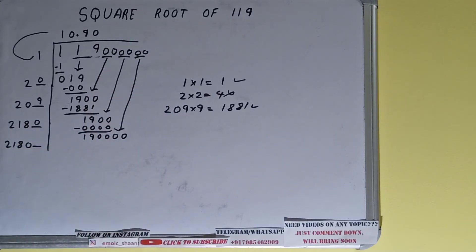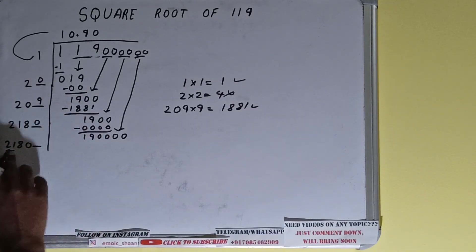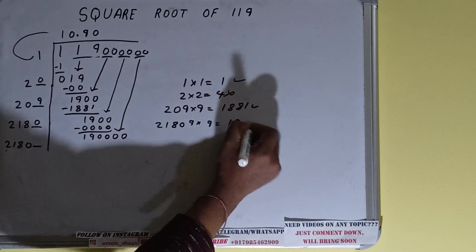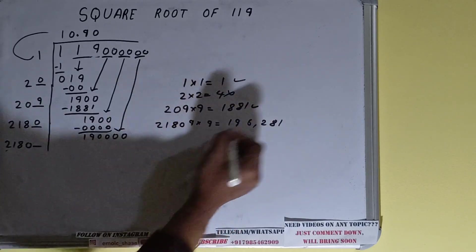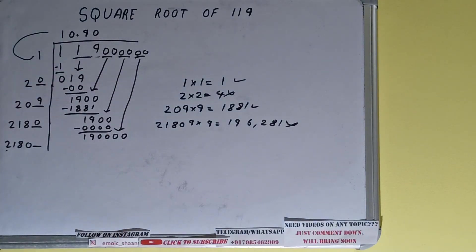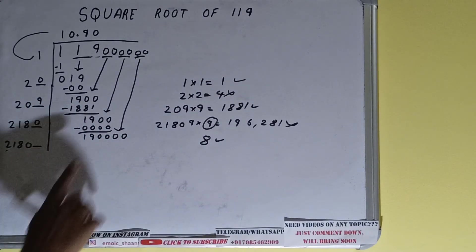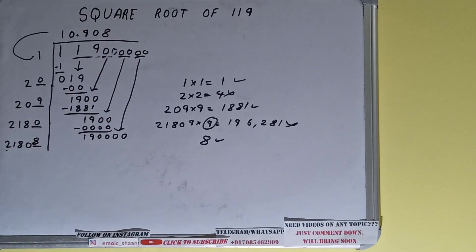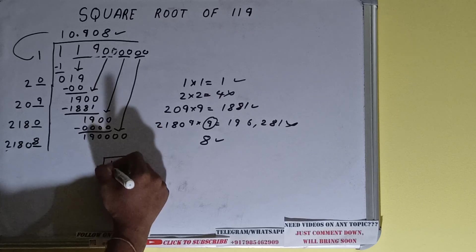Now compare: trying 9 — 21809 times 9 gives 196,281, which is far bigger than 190,000. So we can tell that using 8 will give a number less than that. We write 8 in the quotient and 8 in the divisor. We don't need to calculate further because we've already found our answer correct to three decimal places.